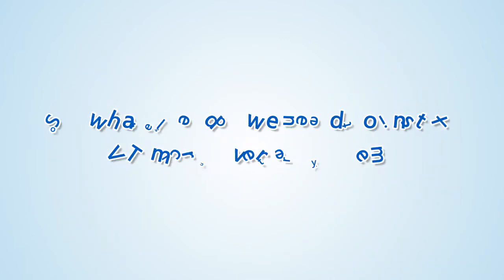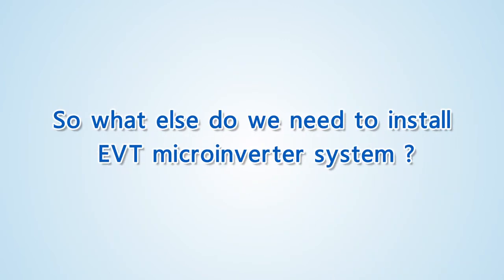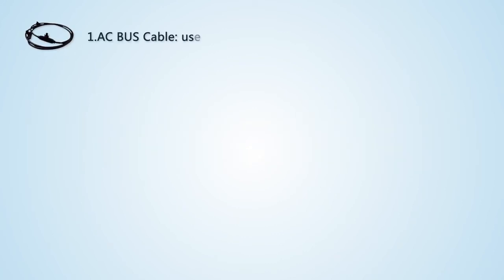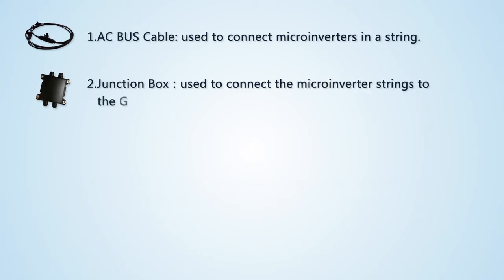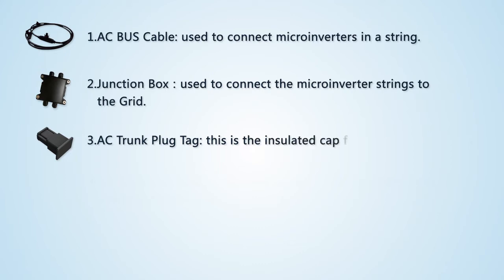So what else do we need to install the EVT microinverter system? First, the AC bus cable, used to connect microinverters in a string. Second, the junction box, used to connect the microinverter strings to the grid. Third, the AC trunk plug cap, which is the insulated cap for AC bus cable connectors.